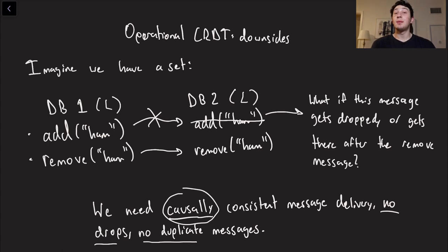The point is that these two writes are causally related, right? Because you can only remove ham if you first added it. So it's important, actually, that if we have an operational CRDT, we need a causally consistent broadcasting system where messages do not get dropped, and they also don't get duplicated. Because these operations are not known as idempotent.